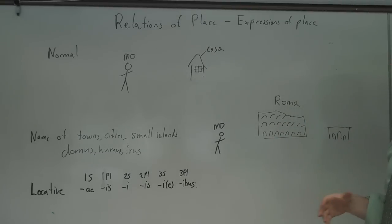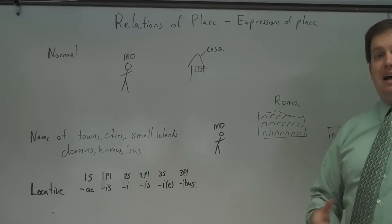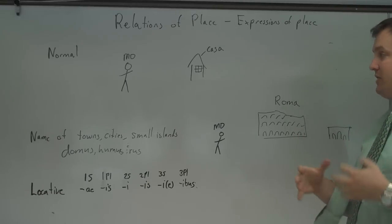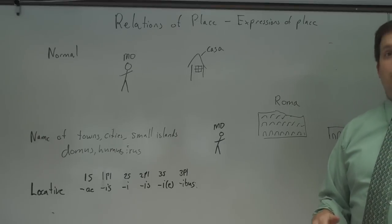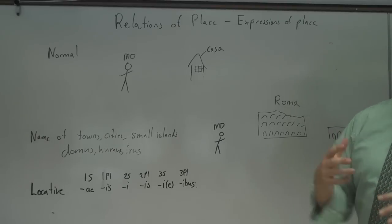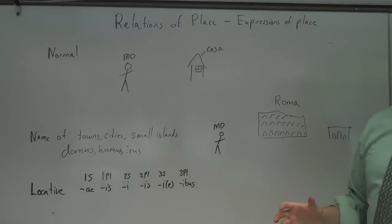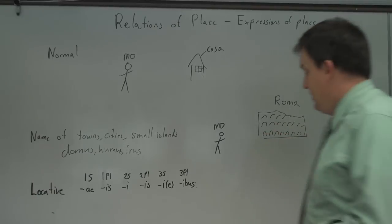The relations of place is all about how Romans express in Latin if you're at some place, if you're going to some place, or you're leaving from some place. We've been working with this through all the different levels of Latin. You've been learning prepositions that tell you I'm here, or I'm going to there, I'm leaving from there. We're going to put them all together here with a little twist at the end.